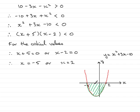So we're looking for values of x in this region. So we can see that from the graph that x has to lie between -5 and 2. Therefore, from the graph, x lies between -5 and 2.